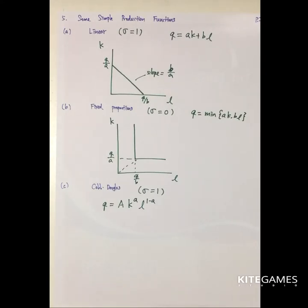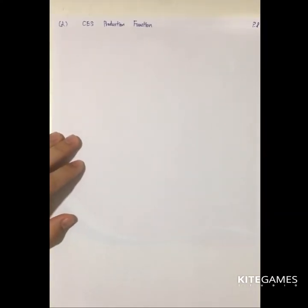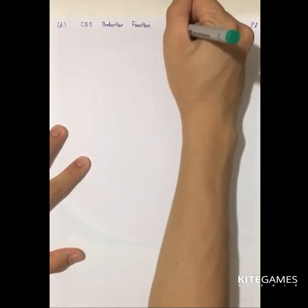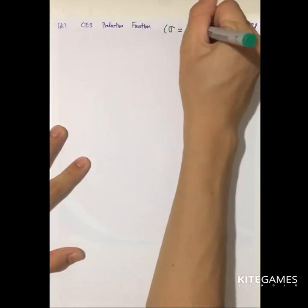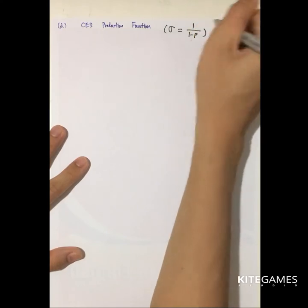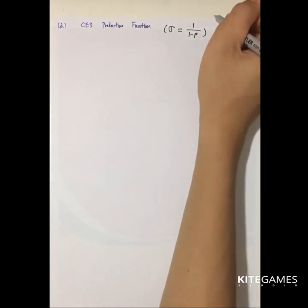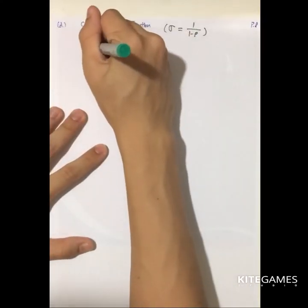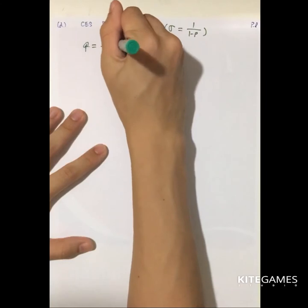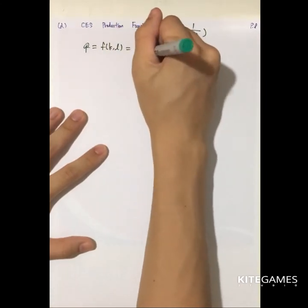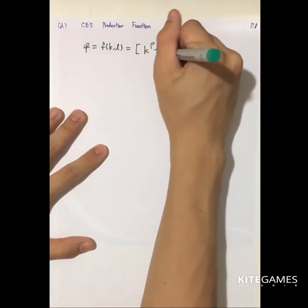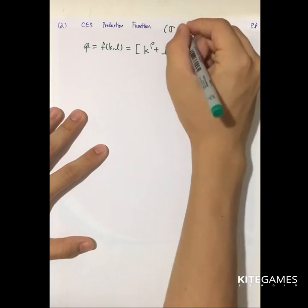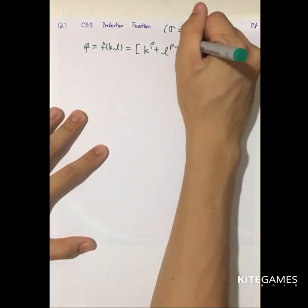The fourth one is called the CES production function. The elasticity of substitution of CES is 1/(1−ρ). The production function is in the form q = (k^ρ + l^ρ)^(γ/ρ).